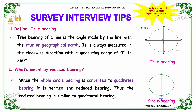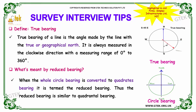Our next question is: define true bearing. The true bearing of a line is the angle made by the line with the true or geographical north. It is always measured in a clockwise direction with a measuring range of 0 to 360 degrees. The angle made with the geographical north gives the true bearing — in this case, 135 degrees.